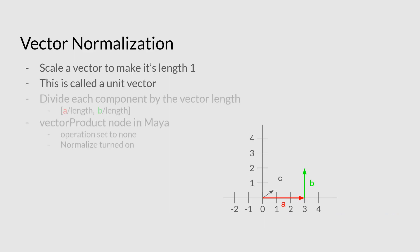Now, to calculate this, we basically have to figure out the length of the vector, and then we divide each of the components by that length. Thankfully, again, Maya has a very handy node to do all this for us. It's called the vector product node, and you just have to set the operation to none, and then it has an option to normalize the output. So that is very, very handy.